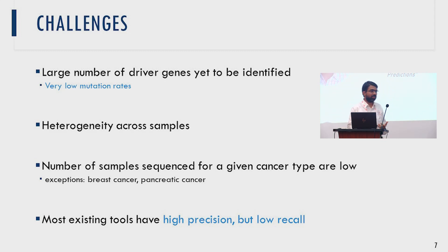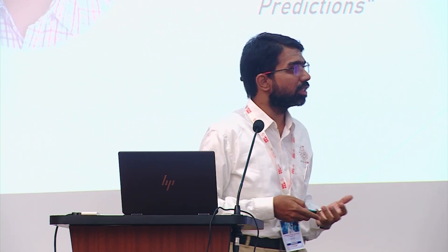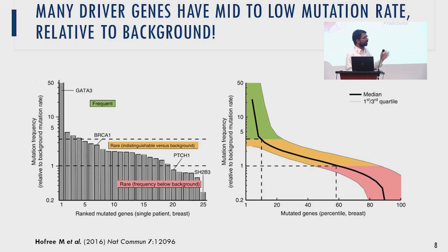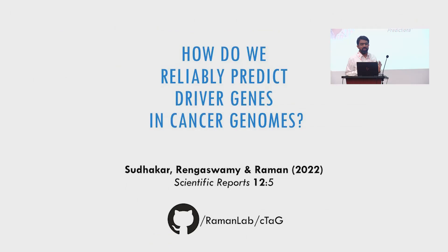There are still a large number of driver genes to be identified. There's huge heterogeneity across samples, and for a given cancer you often have very few samples. Today's tools have very high precision but low recall, meaning they miss many rare driver genes. You can see from this map of tools that there is very low recall for many of the methods invoked today.